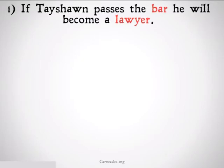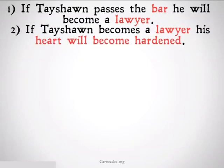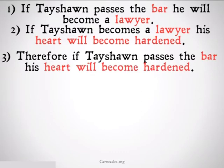So hypothetical syllogisms look like this. If Tayshawn passes the bar, he will become a lawyer. If Tayshawn becomes a lawyer, his heart will become hardened. Therefore, if Tayshawn passes the bar, his heart will become hardened.